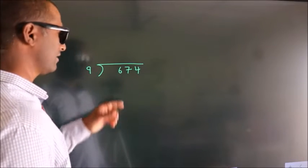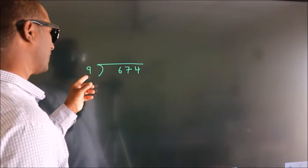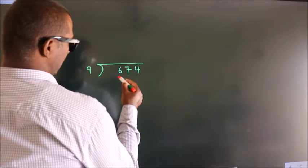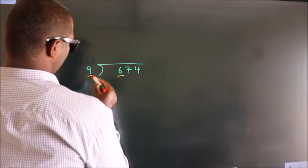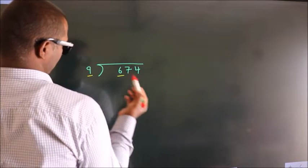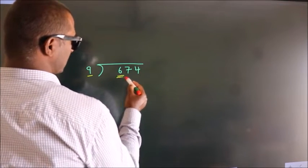How to divide 674 by 9? See, here we have 6, here 9. 6 smaller than 9, so we should take two numbers.